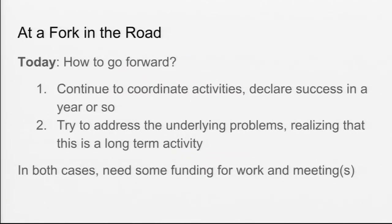In some ways we're at a fork in the road, and we're really trying to figure out how to go forward. There are two things we could potentially do. One is to basically continue to coordinate activities, and after another six months to a year declare that things are going forward independently and they can communicate without a working group to help them — and we're done and happy.